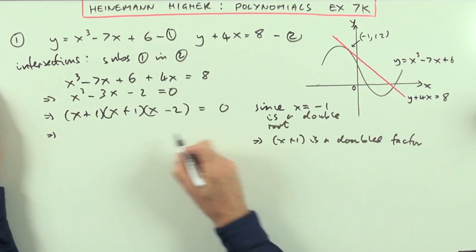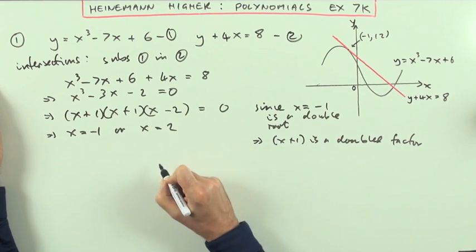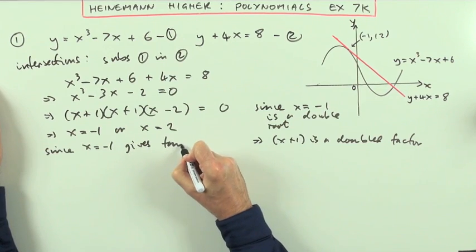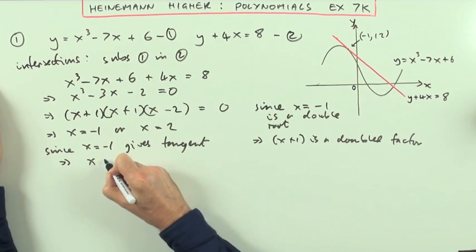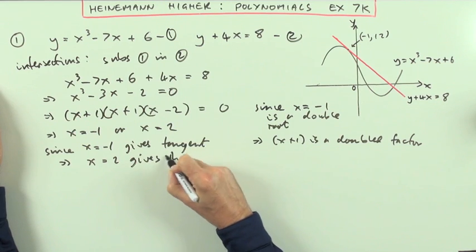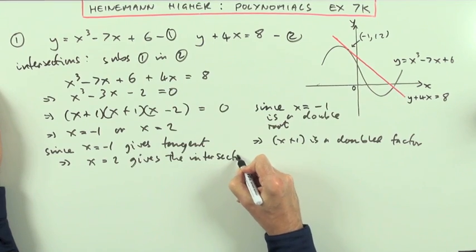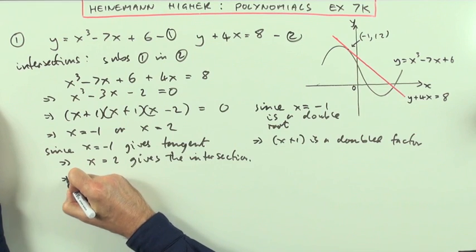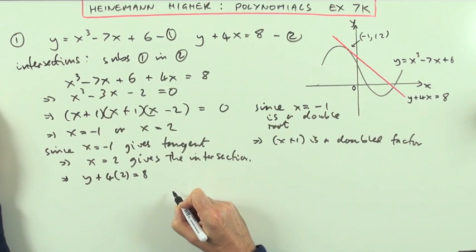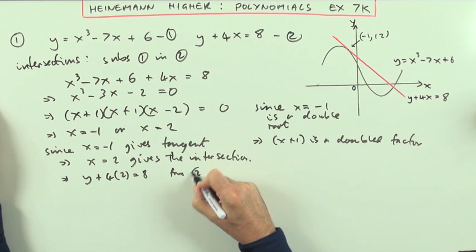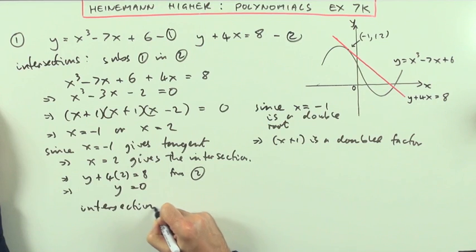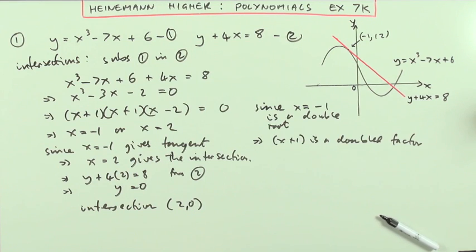And then simply it says that x = -1 or x = 2. But since x = -1 gives the tangent, that means that x = 2 gives the intersection. And once I know that x = 2 gives the intersection then I can substitute it back into one of those. Which means that y + 4 times 2 = 8. From or using 2. Which means y = 0. So that means that the intersection is at the point (2, 0). And that's all I would need to do there.